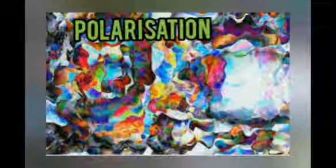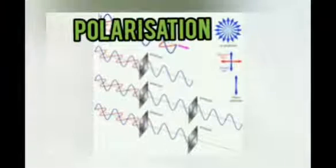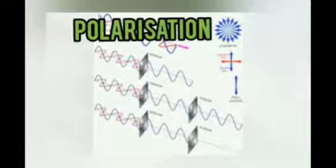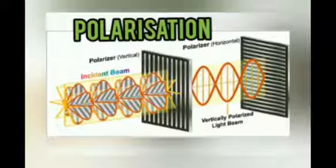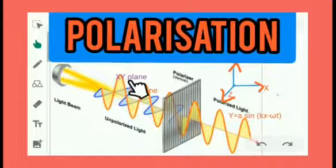Today we are going to discuss polarization. Interference and diffraction explain light is a wave, but they don't show what type of wave light is. Polarization explains that light is a transverse wave. We will see how polarization explains the nature of the light wave and discuss it in detail.